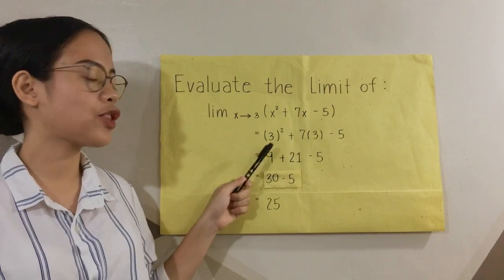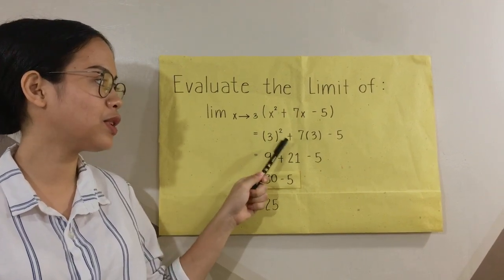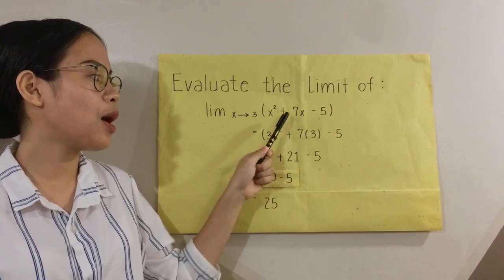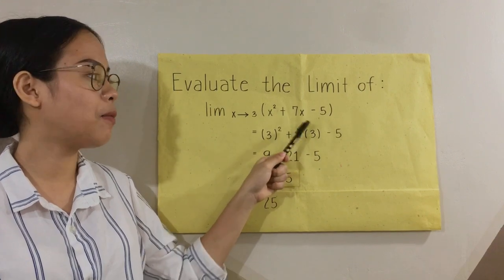x squared will become 3 raised to the power of 2 plus 7 multiplied by 3 minus 5.